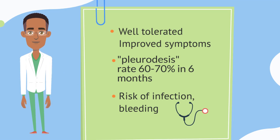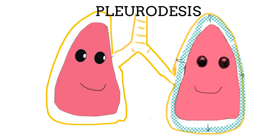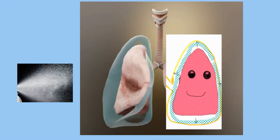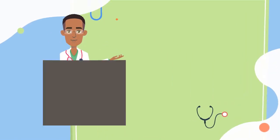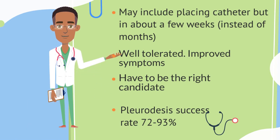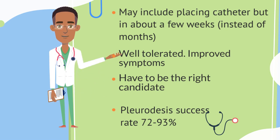Another treatment option is called the pleurodesis procedure. For this procedure, the doctor will instill or spray a medication into the pleural cavity to activate the pleural membranes to stick against each other, preventing pleural fluid from reaccumulating. This procedure may also include placing a catheter, but for only about a few weeks instead of months. It is well tolerated, improves symptoms, and has a very high success rate — resolving malignant pleural effusion 72 to 93 percent of the time in a short period. Most patients experience some pain after the procedure because of the activation of the pleura to prevent recurrence.